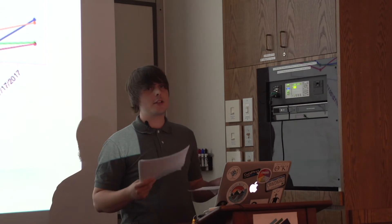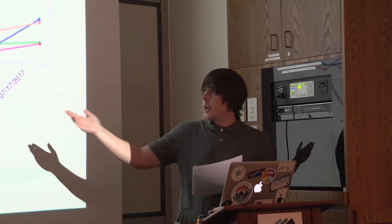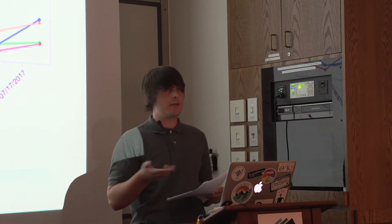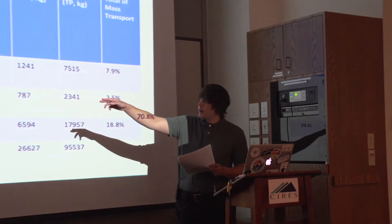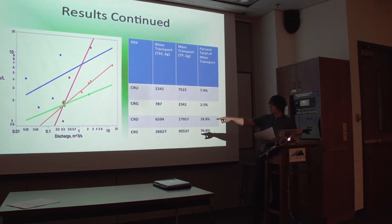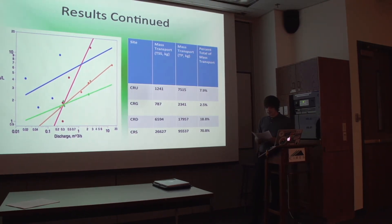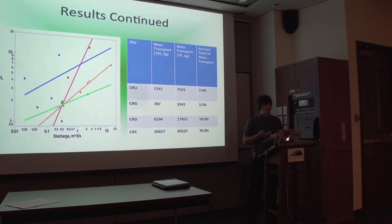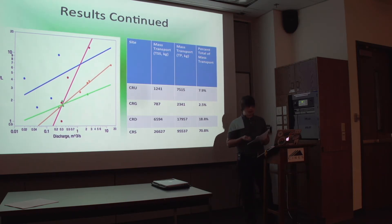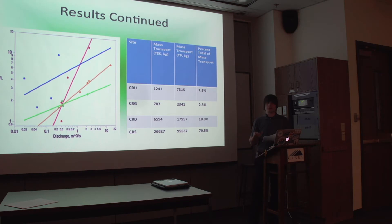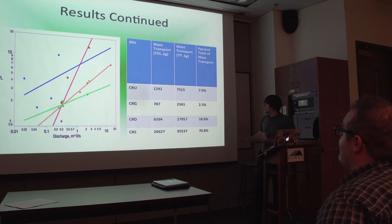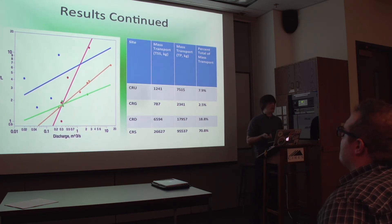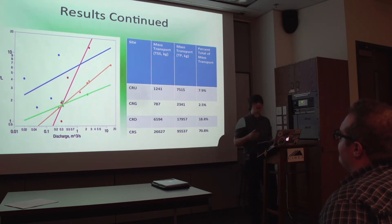As particle concentrations increase, total particulate phosphorus increases as well. Total particulate phosphorus concentrations declined over the study period after peak snowmelt. Looking at the log-transformed axes plot, the particulate phosphorus in Crater Gulch tends to be higher for a given concentration even though it displays lower discharge in comparison with the other sites. The mass transport table shows total suspended solids and total phosphorus in kilograms. CRG, or Crater Gulch, only made up about 3% of the total mass transport of TSS and total phosphorus flowing into Shadow Mountain Reservoir.